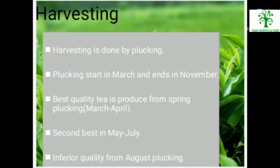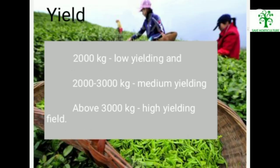Harvesting of Tea. Harvesting is done by plucking. Plucking starts in March and ends in November. The best quality tea is produced from spring plucking in March to April. Second best quality is from May to July. Inferior quality is from August plucking. Yield of Tea: below 2000 kg is low yielding; 2000 to 3000 kg is medium yielding; above 3000 kg is high yielding.